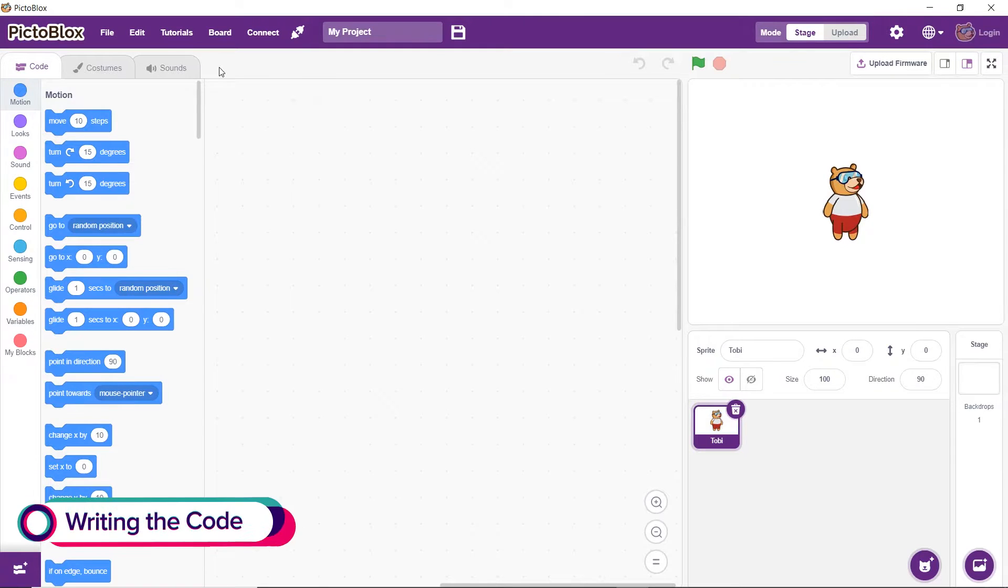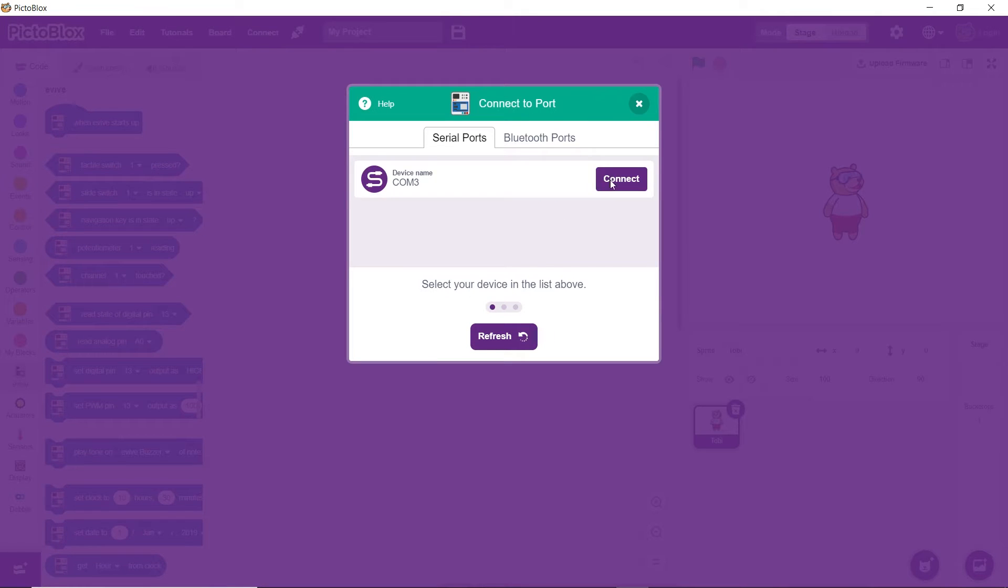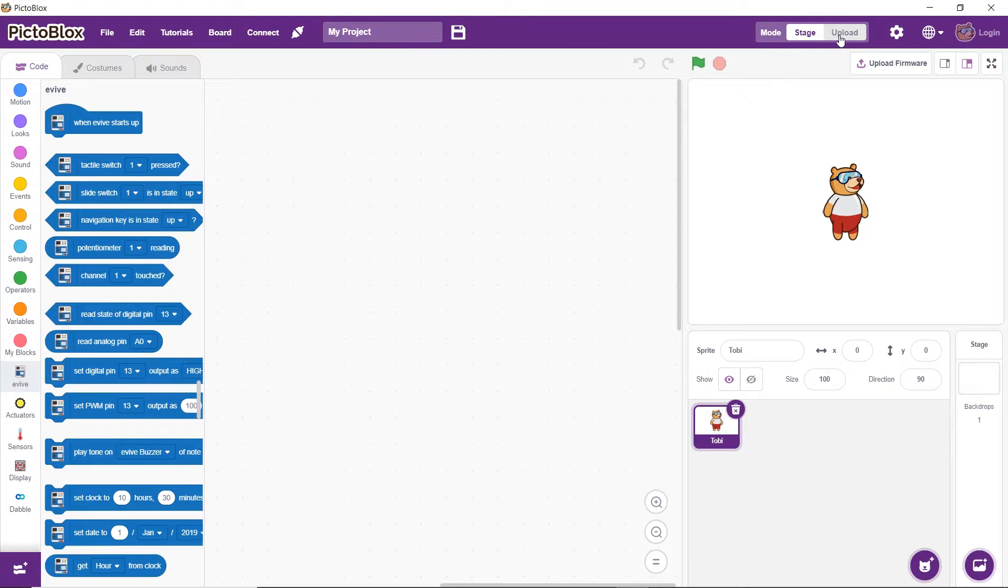Time to move on to the Pictoblox script. Pictoblox is a graphical programming software based on Scratch Blocks. If you haven't downloaded Pictoblox yet, go to the link given in the description box or the card above and download it from there. For creating the script, first select evive as your board. Then choose the appropriate serial port. Next, switch to upload mode.